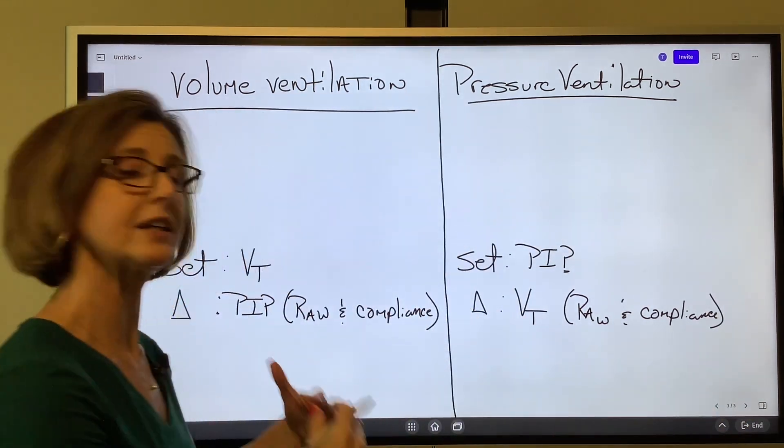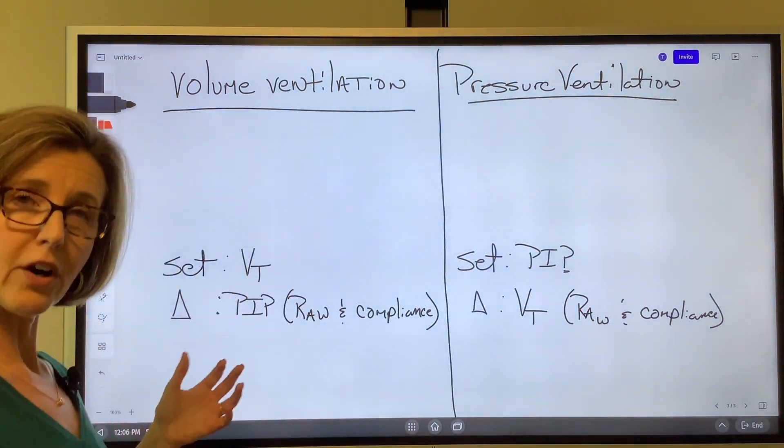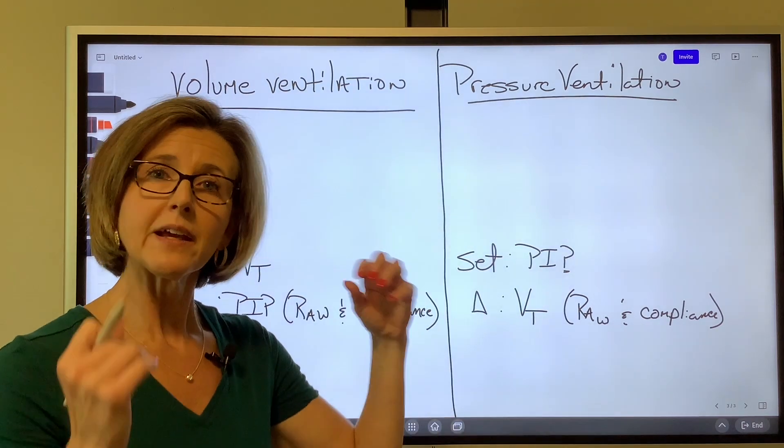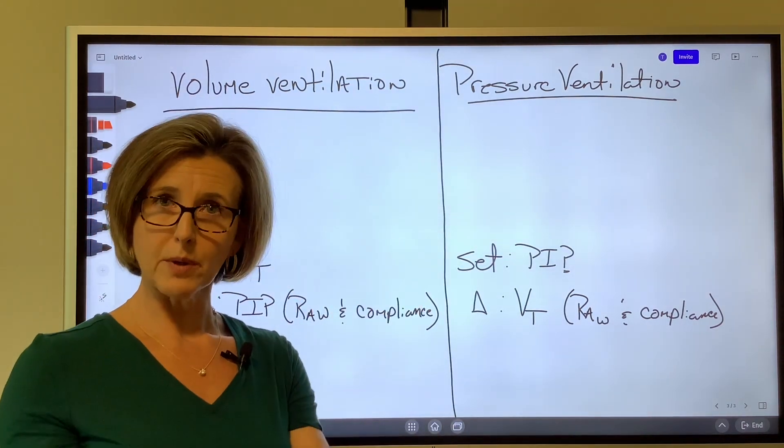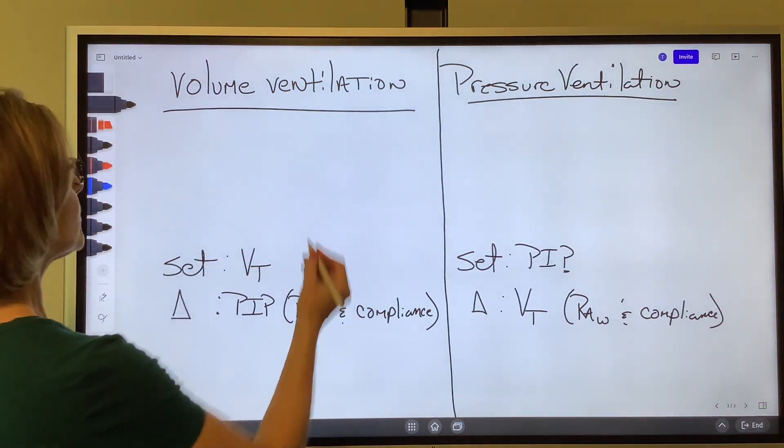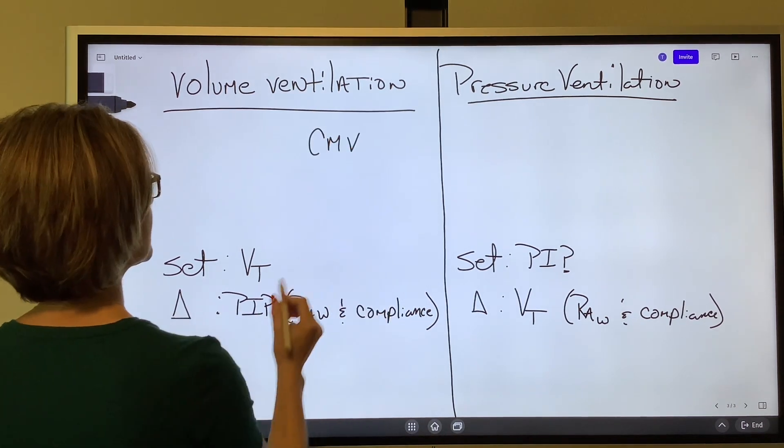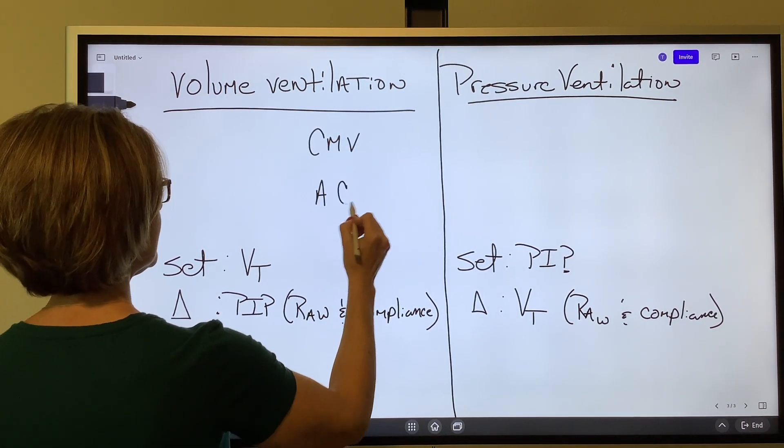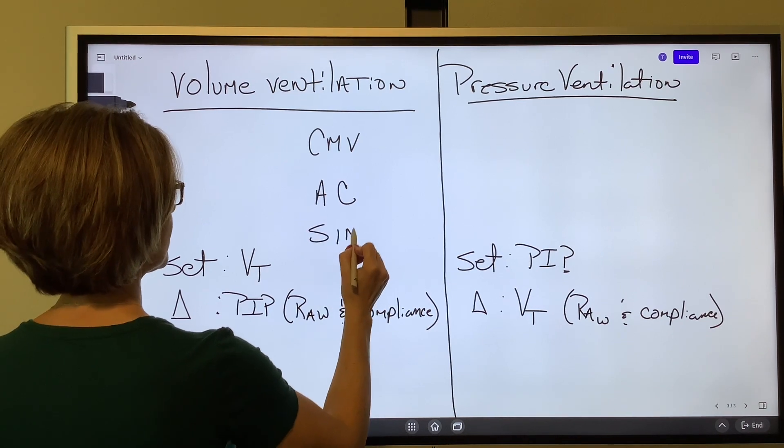All right. So basically, two types of ventilation, volume ventilation and pressure ventilation. Now, we've got modes of ventilation. In volume ventilation, we have CMV, we have AC, and we have SIMV.